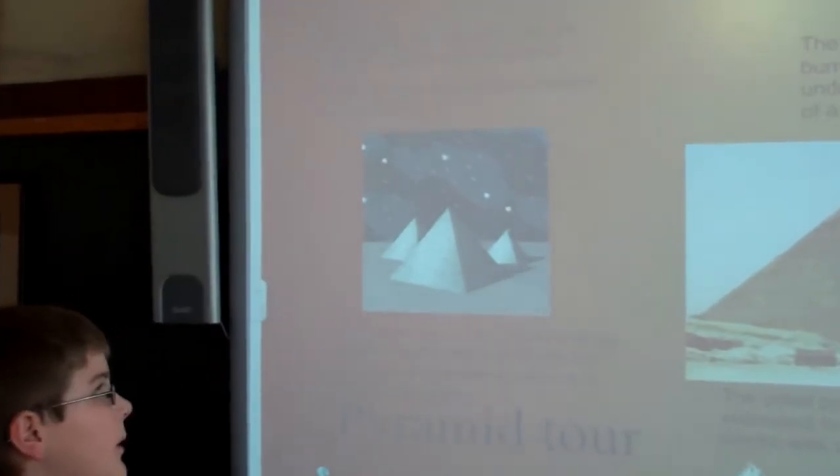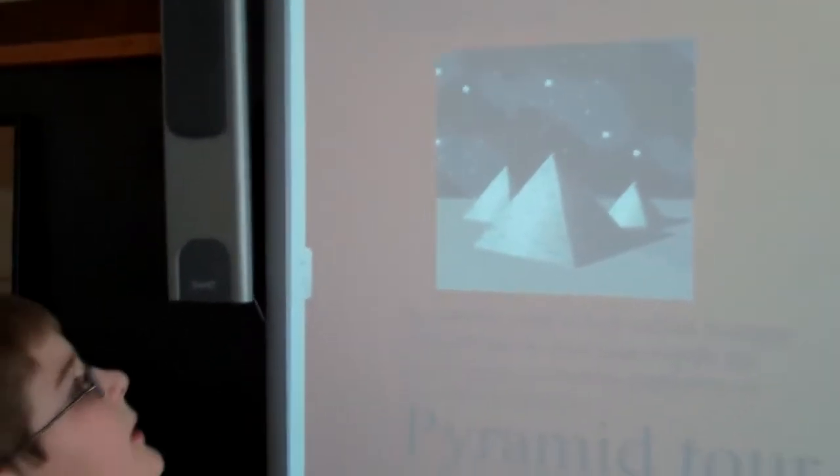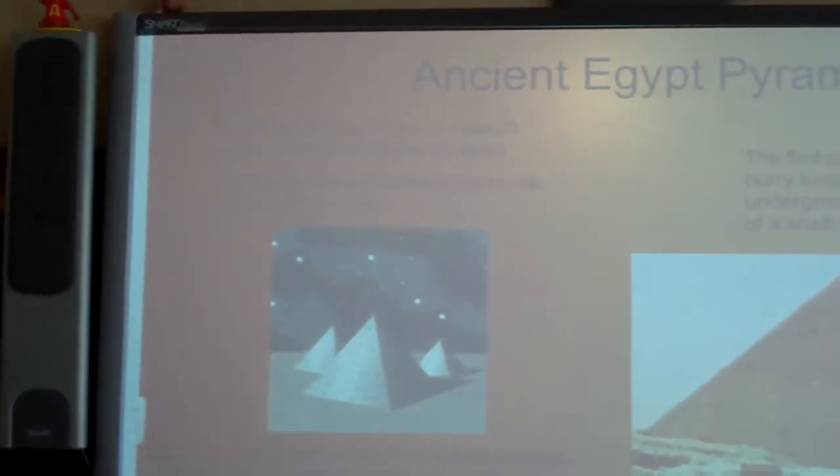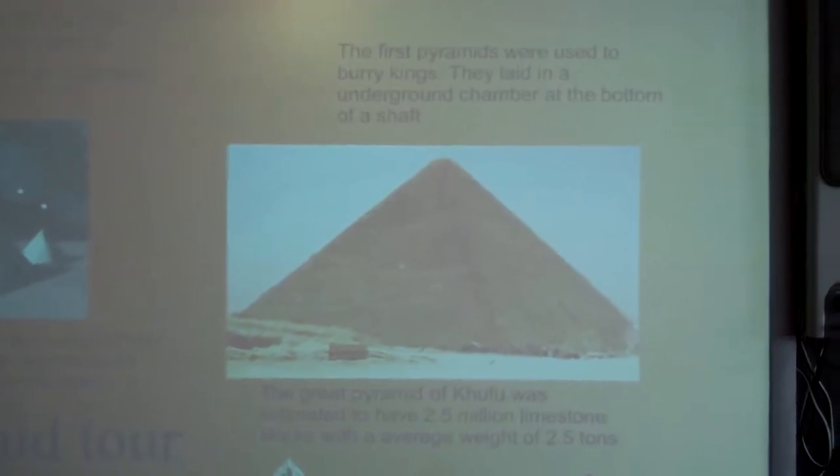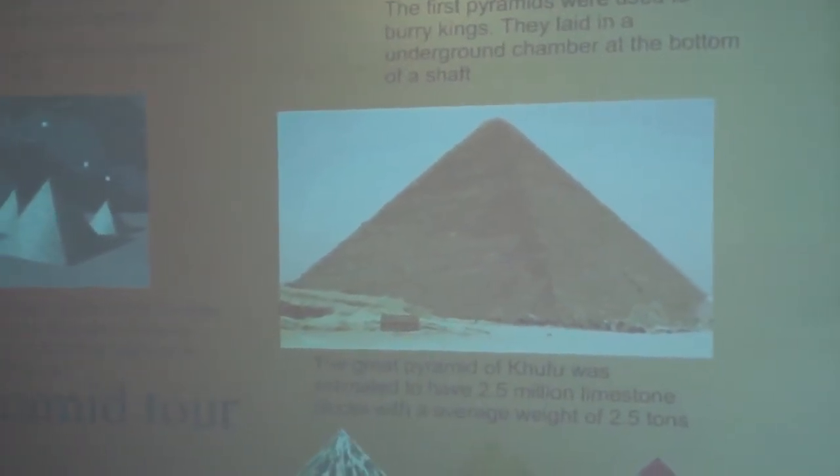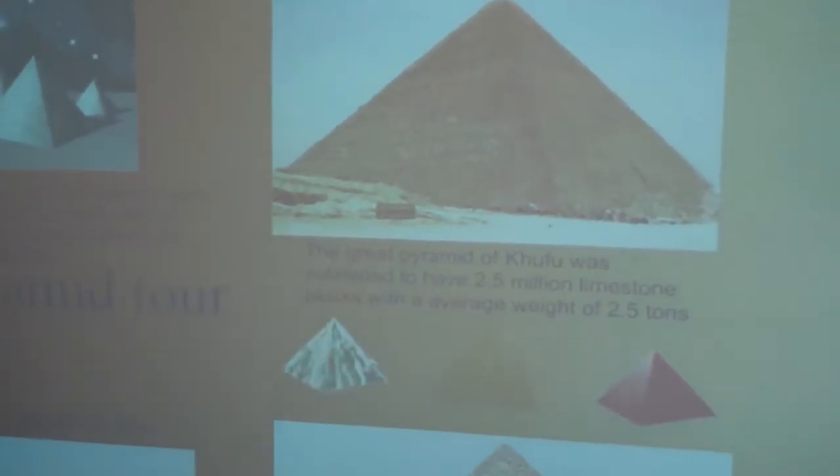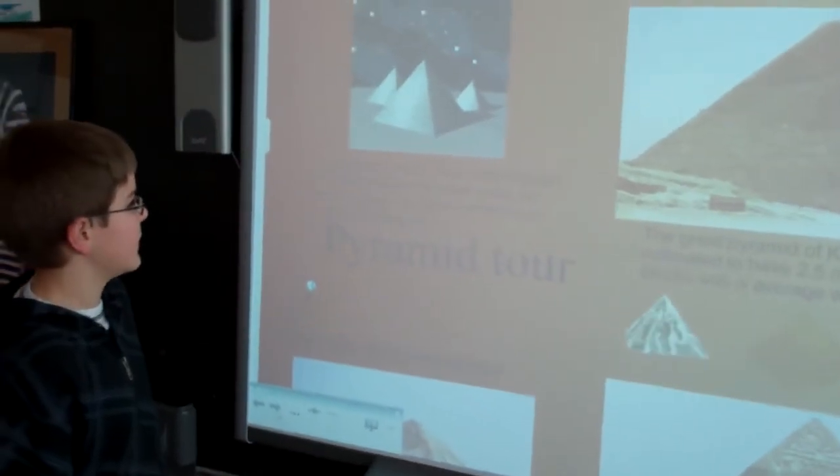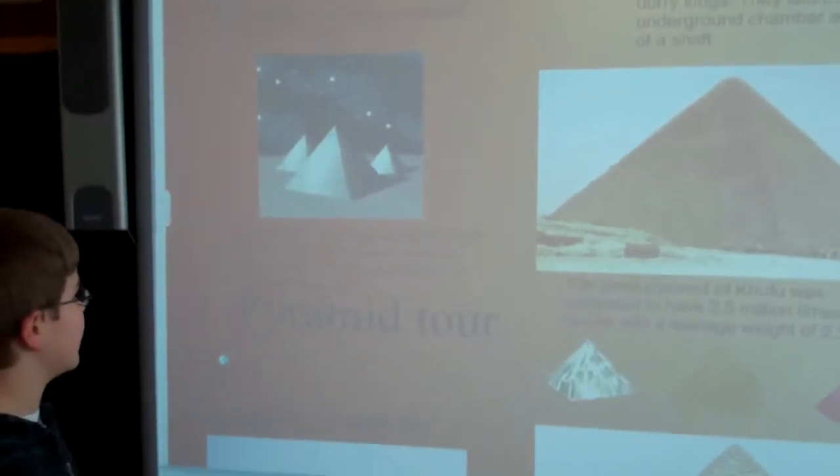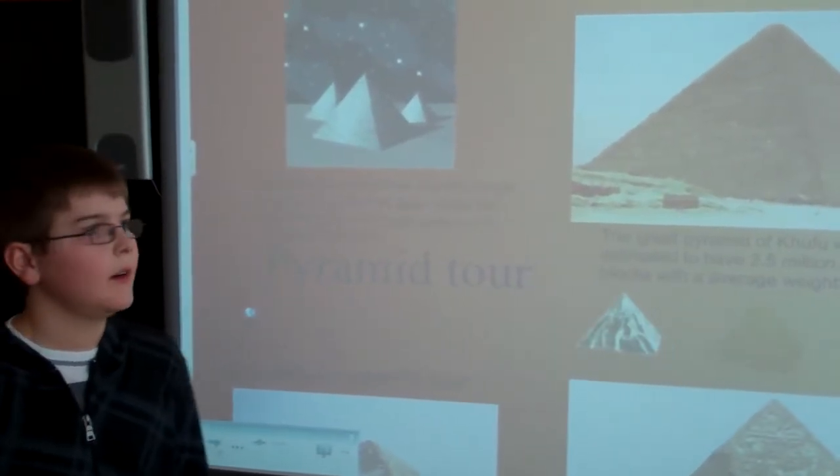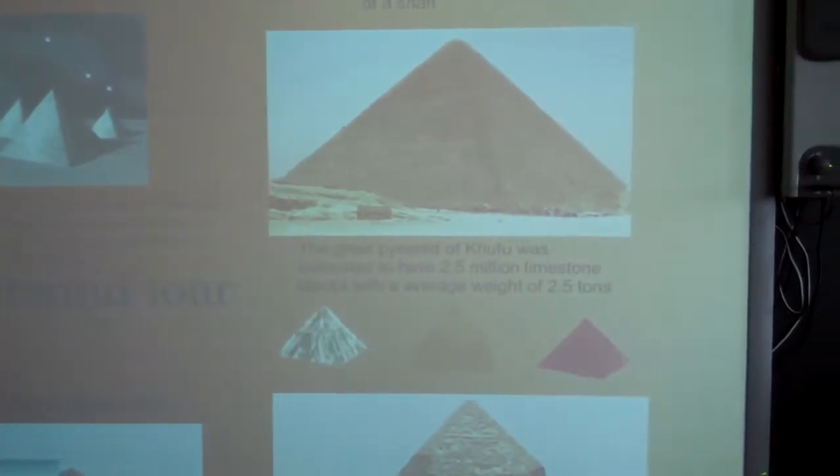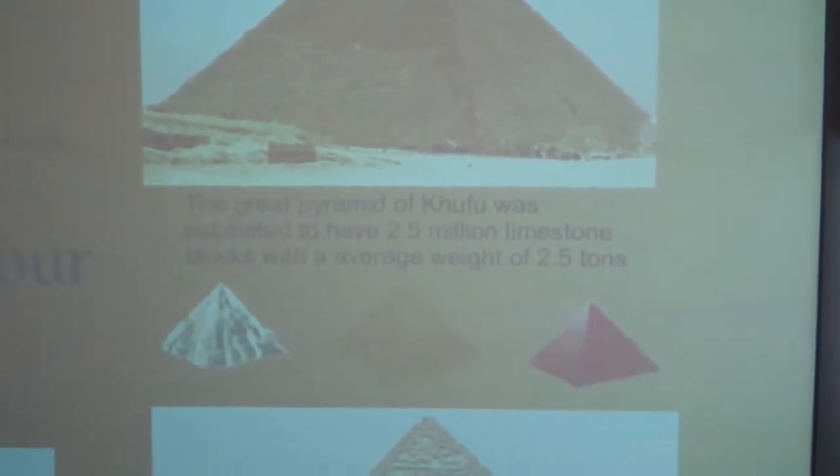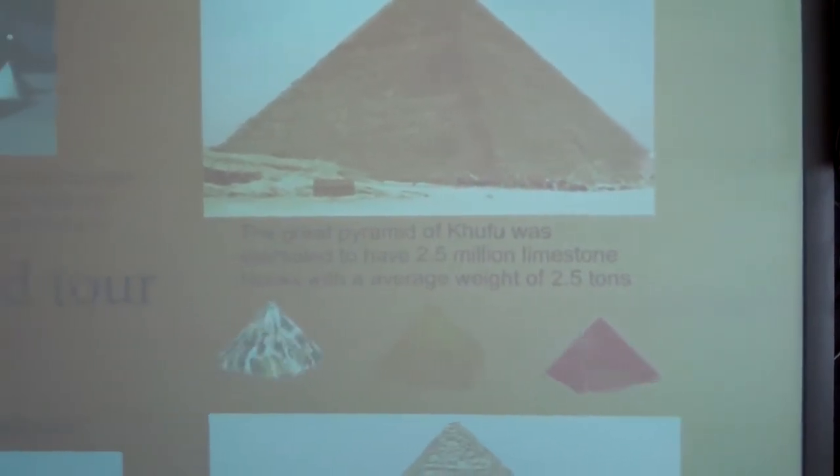It was told it took 100,000 men 20 years to build the Great Pyramid. Some of the most famous pyramids are found in Giza. The first pyramids were used to bury kings. They laid in an underground chamber at the bottom of a shaft. A pyramid was a four-sided triangle-shaped figure. The Great Pyramid was estimated to have 2.5 million limestone blocks with an average weight of 2.5 tons.